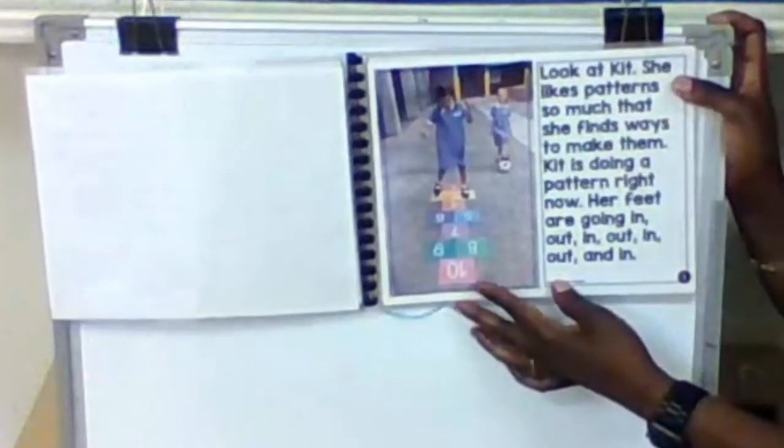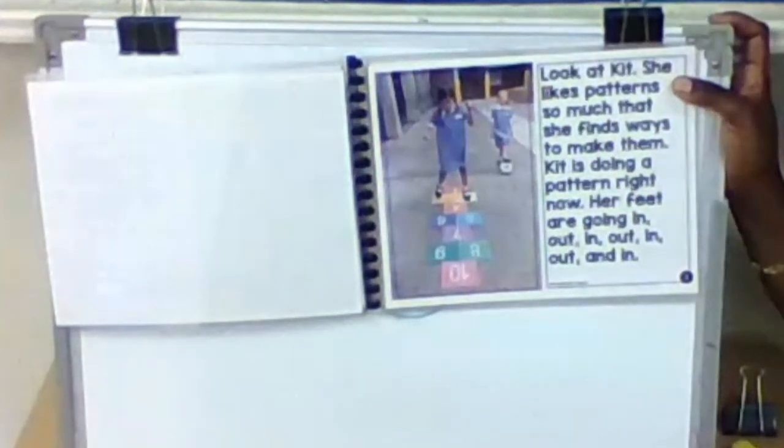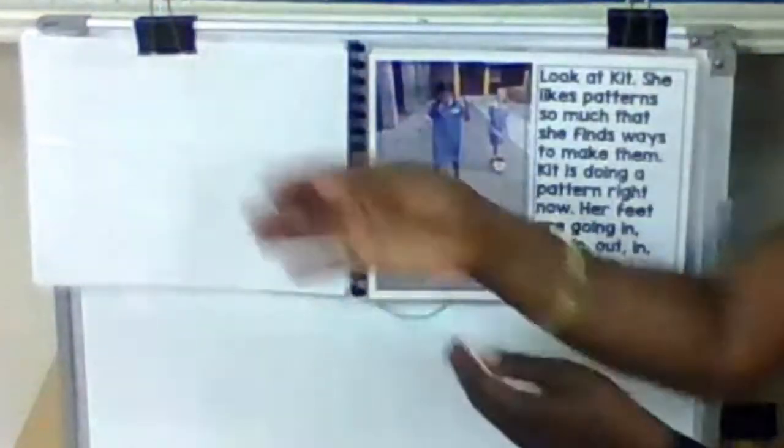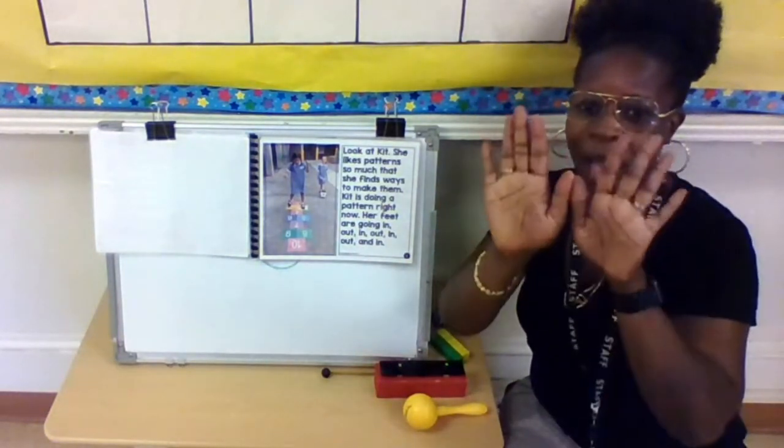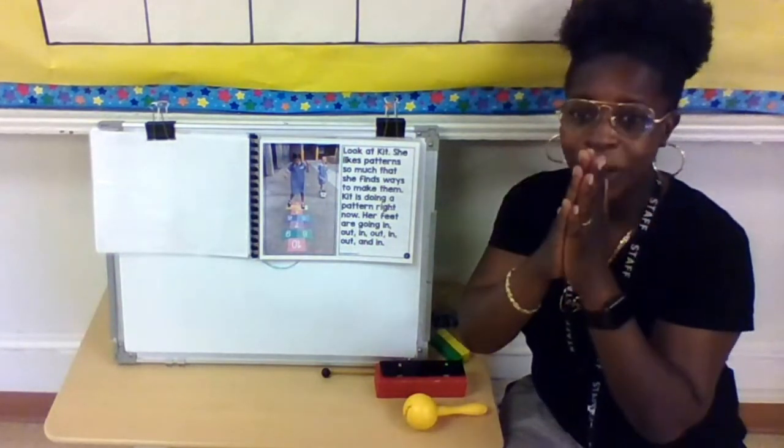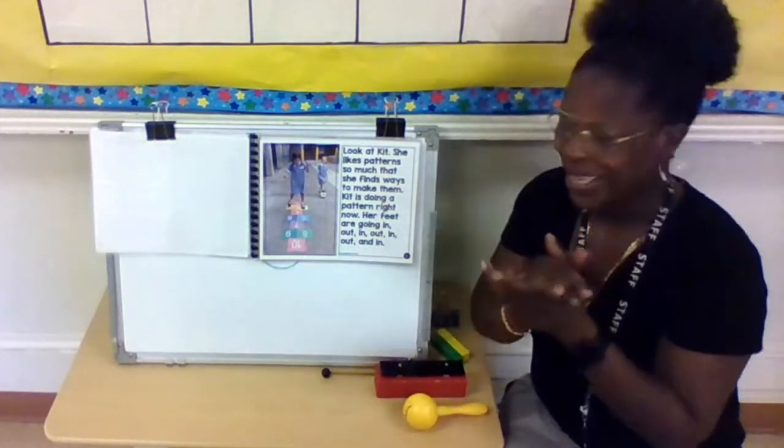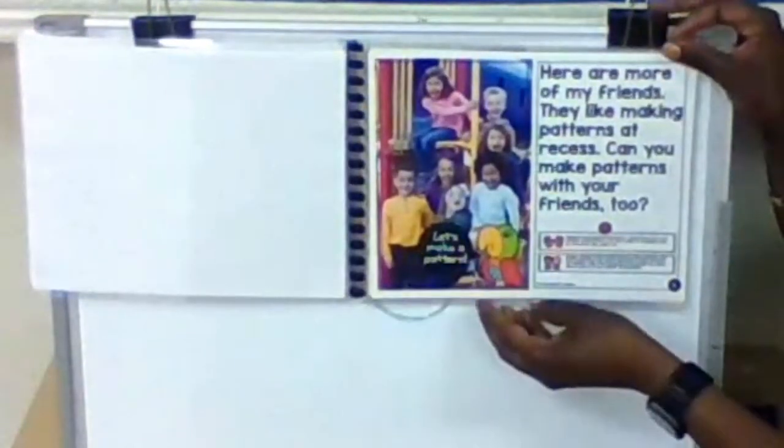Look at Kit. She likes patterns so much that she finds ways to make them. Kit is doing the pattern right now. Her feet are going in, out, in, out, in, out, and in. So my friends, let's see if we can do that pattern with Kit. Are you ready? Take your hands and go in, out, in, out, in, out. What comes next? Right. In, what comes next? Out. What comes next? In, out. Good job, my friend.